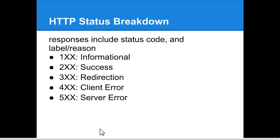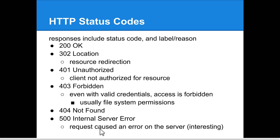Anything in the 100 series is purely informational. Anything in the 200 series is usually success — the most common is 200, meaning the resource was found and here's the HTML page. 300 is redirection — the resource you're trying to locate was previously here and we're redirecting you to its actual location. The 400 series is client error; the most common is 404, which means resource not found. The 500 series is interesting for vulnerability analyzers because it indicates something has gone wrong on the server.